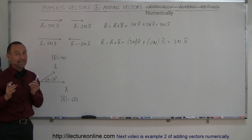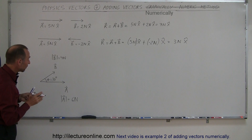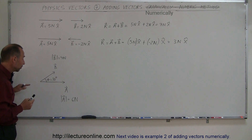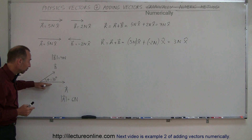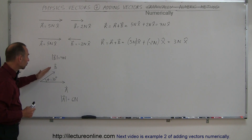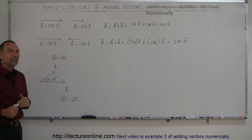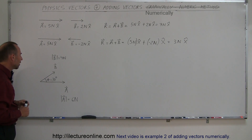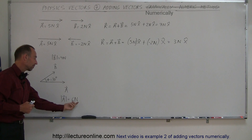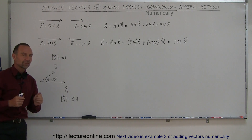Now let's look at this example. Here we have two vectors that are not pointing in the same direction or in the opposite direction. The A vector is pointing in the positive x-direction, but the B vector is pointing in a direction that's 30 degrees above the horizontal, above the positive x-direction. The B vector has a magnitude of 4 Newtons and the A vector has a magnitude of 6 Newtons.